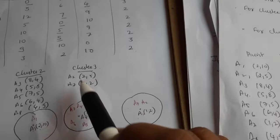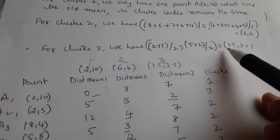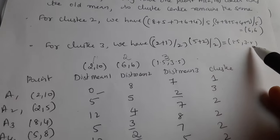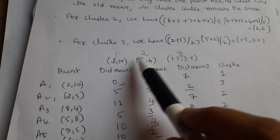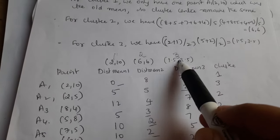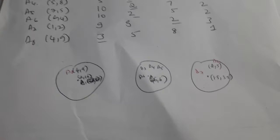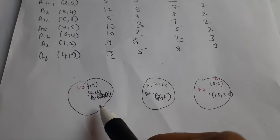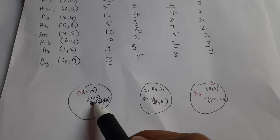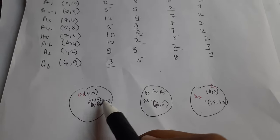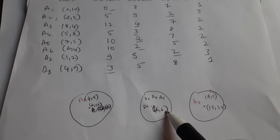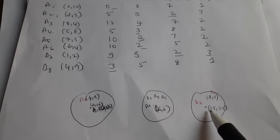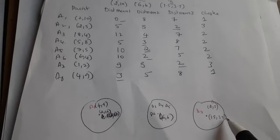For cluster 3, we compute (2+1)/2 = 1.5 and (5+2)/2 = 3.5, giving centroid (1.5, 3.5). So the new centroids are: cluster 1 at (2, 10) — unchanged; cluster 2 at (6, 6); and cluster 3 at (1.5, 3.5).